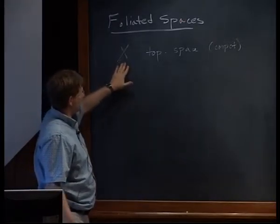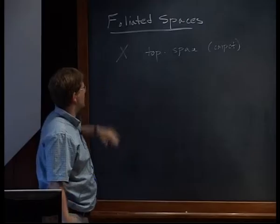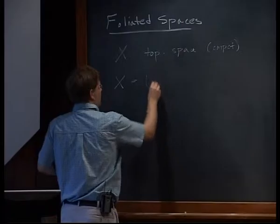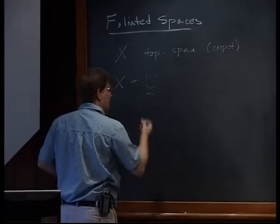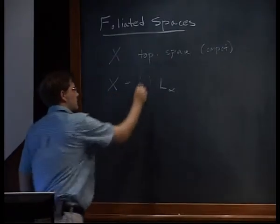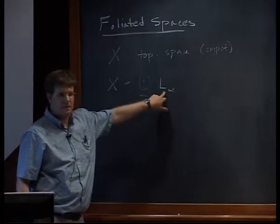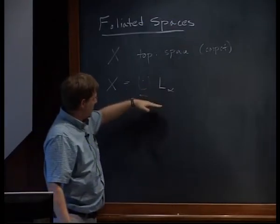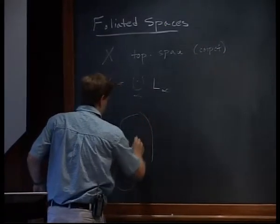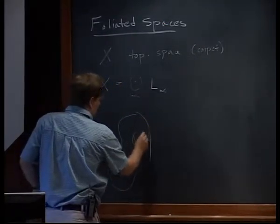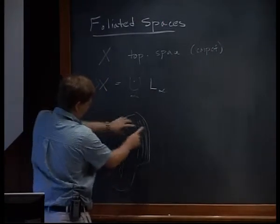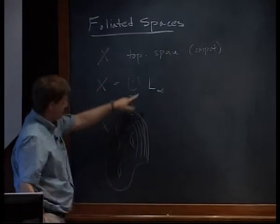We use the term 'foliated spaces' — the Connes group of foliators tends to use this terminology. Here we're using foliation in the sense of having a decomposition of the space X into a bunch of leaves. So maybe X looks like this, and the leaves look like this — I have my space X decomposed into a disjoint union of leaves.